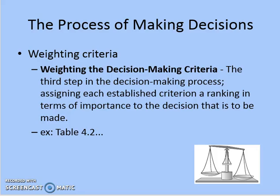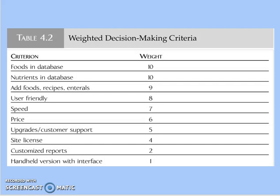The third step: once we have identified the specifications, we decide the priority of each specification — which is highest priority and which is lowest — and then assign corresponding weights to each. Weighing the decision making criteria means assigning each established criterion a ranking in terms of importance. For example, the criterion 'foods in database' for nutrient analysis has the highest priority, so it is assigned a weight of 10 out of 10.